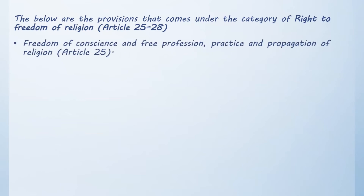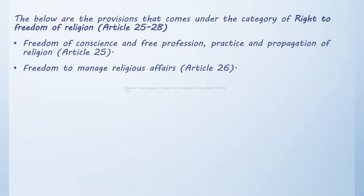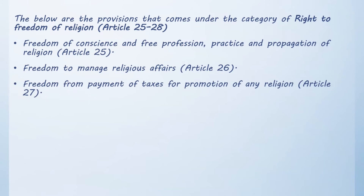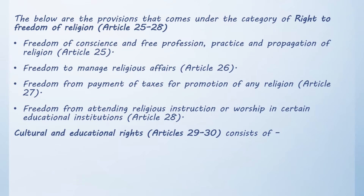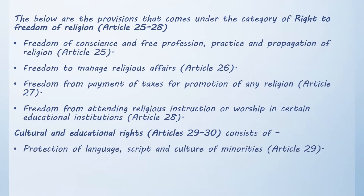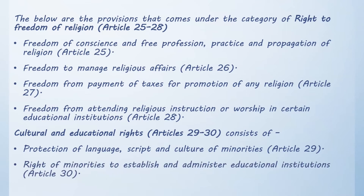The provisions under the Right to Freedom of Religion are: Freedom of conscience and free profession, practice, and propagation of religion (Article 25); Freedom to manage religious affairs (Article 26); Freedom from payment of taxes for promotion of any religion (Article 27); and Freedom from attending religious instruction or worship in certain educational institutions (Article 28). Cultural and Educational Rights (Articles 29–30) include protection of language, script, and culture of minorities (Article 29) and the right of minorities to establish and administer educational institutions (Article 30).